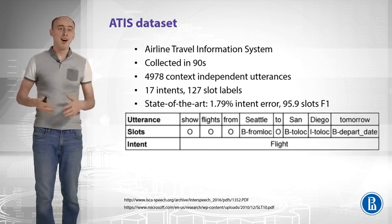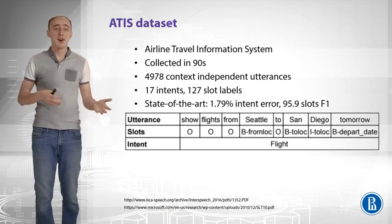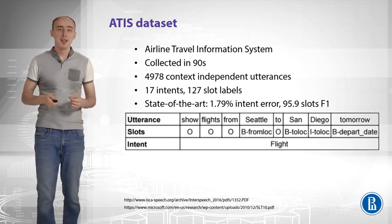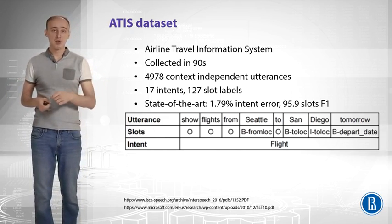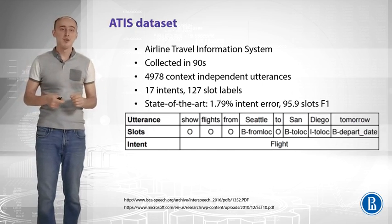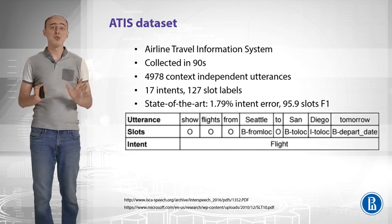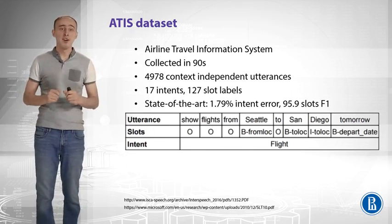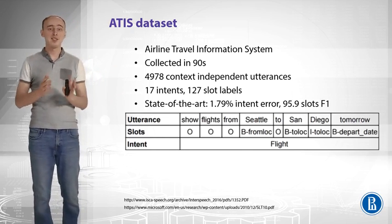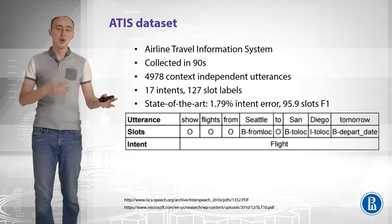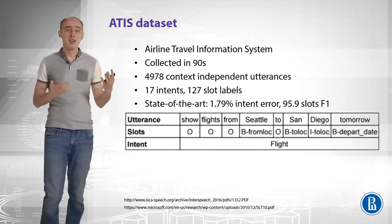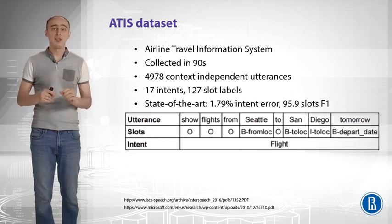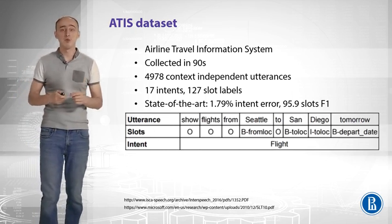To move further with our review of intent classifier and slot tagger, we need a dataset. Let's take the ATIS dataset — Airline Travel Information System — collected in the 1990s. It has roughly 5,000 context-independent utterances, meaning we have a one-turn dialogue with no need for a fancy dialog manager. It has 17 intents and 127 slot labels such as from-location, to-location, departure time, and so forth. A sample utterance is 'Show me flights from Seattle to San Diego tomorrow.' The state of the art is 1.7% intent error and 95.9 slot F1.